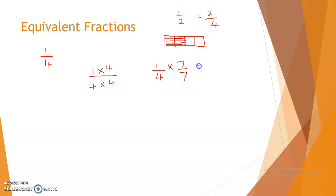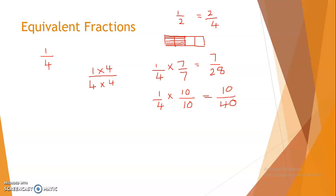I hope now it is clear. For example, 1 by 4 multiplied by 7 by 7: 1 into 7 is 7, and 4 into 7 is 28. So an equivalent fraction of 1 by 4 is 7 by 28. You can multiply by any number. If I multiply by 10, numerator into 10 and denominator also into 10, this becomes 10 by 40. Similarly, you can divide both numerator and denominator by the same number — starting with 10 by 40, divide both by 10: 10 divided by 10 is 1, and 40 divided by 10 is 4, giving the equivalent fraction 1 by 4.